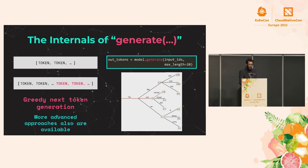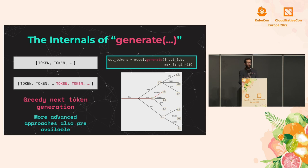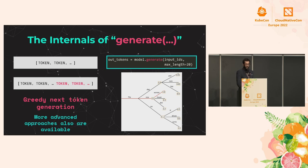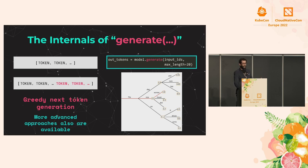The internals of the generate function could be a greedy approach of taking the next most likely token, but we can also use other algorithms — like the beam search algorithm, which has a look-ahead to find the most plausible series of tokens. We're going to abstract all of this and primarily interact with it as a black box.